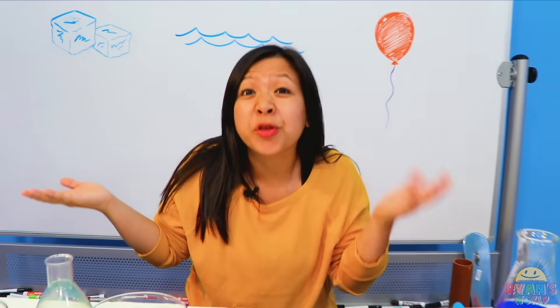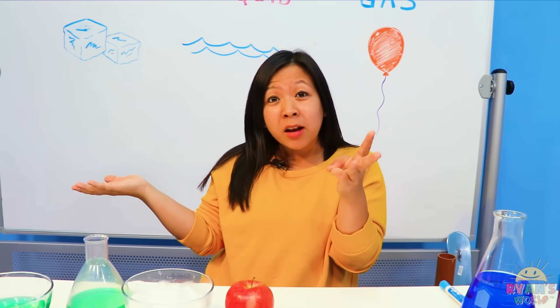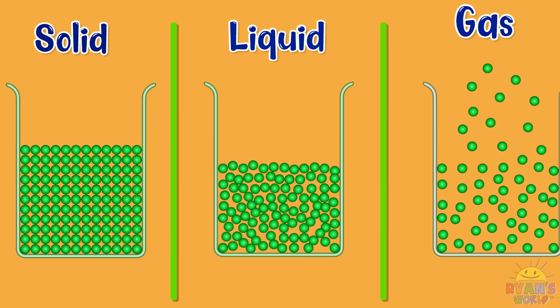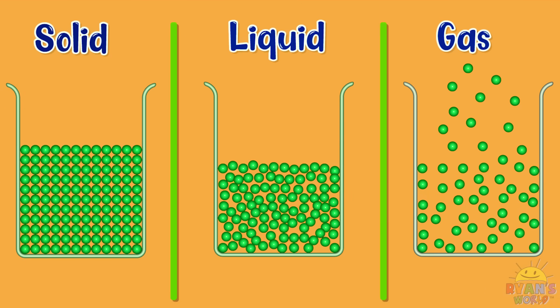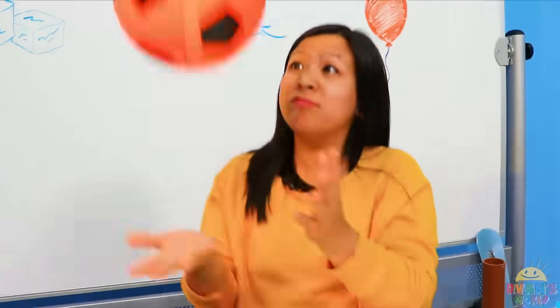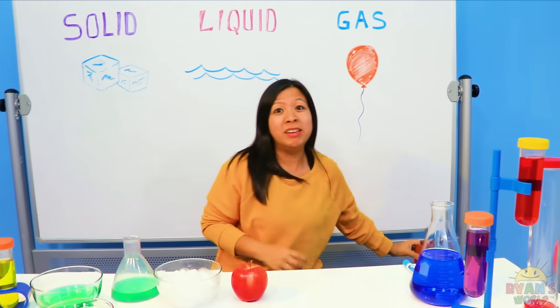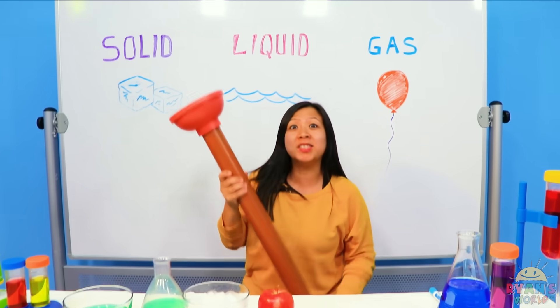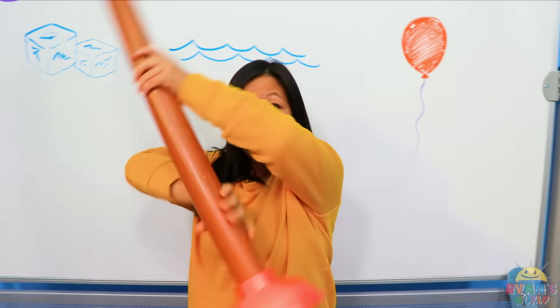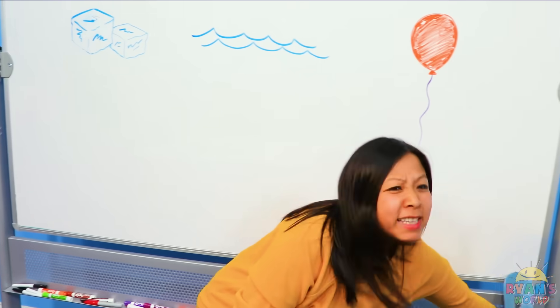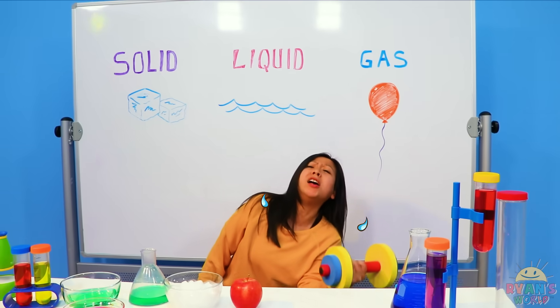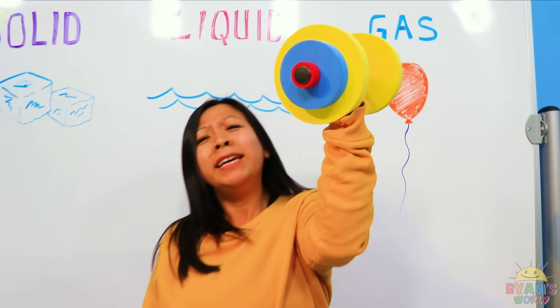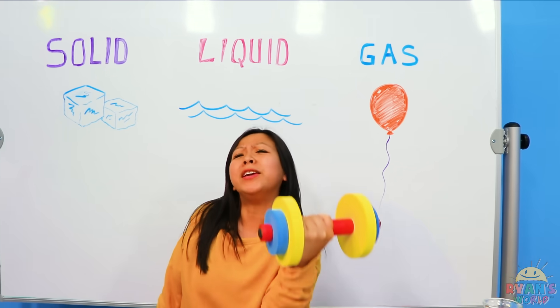But why are there three states of matter? Well, it's because the particles in solid, liquid, and gas are all different. For example, a solid, like this ball, has particles that keep its shape and volume. This is also a solid — it keeps its shape and volume. And this is also a solid, keeping the same shape and volume.